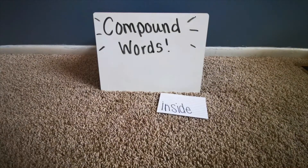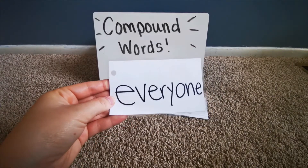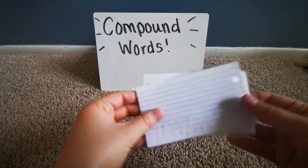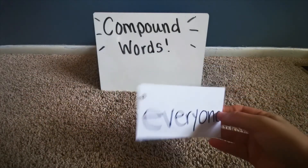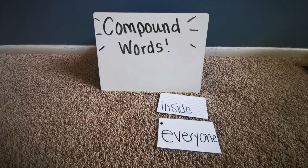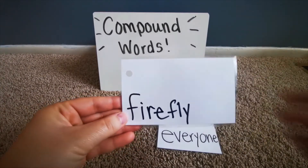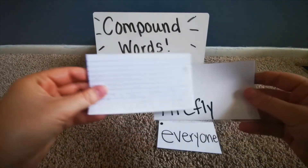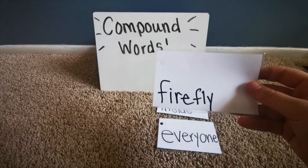Let's look at the other ones. Everyone — everyone is made up of every and one. Firefly — firefly is made up of fire and fly.